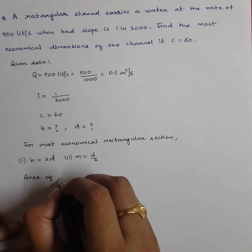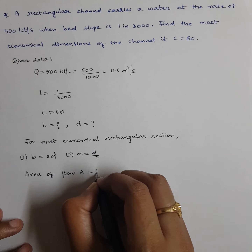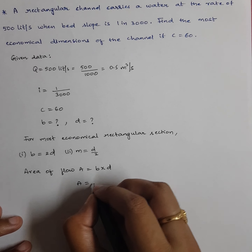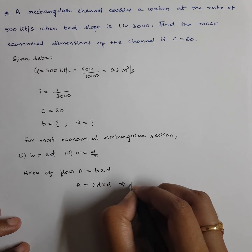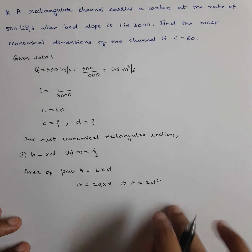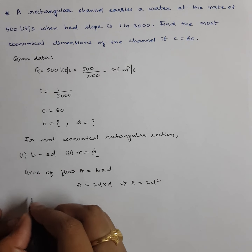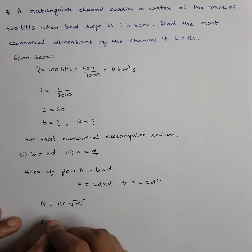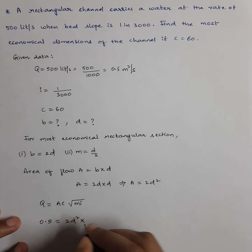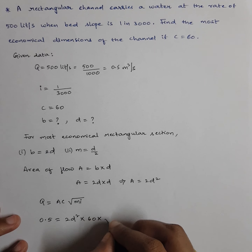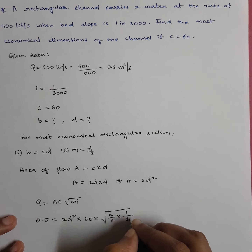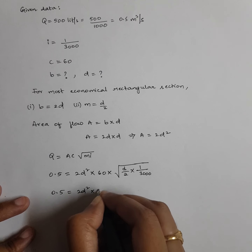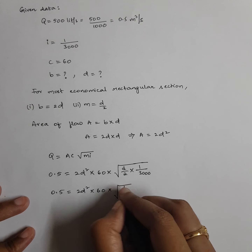First, calculate area of flow. Area A equals B into D. For most economical section B equals 2D, so A equals 2D into D, which gives A equals 2D². Now M is already D by 2. Taking the discharge formula Q equals A·C·√(M·I): substituting 0.5 equals 2D² into 60 into root of (D/2) into (1/3000), which simplifies to 0.5 equals 2D² into 60 into √(D/6000).